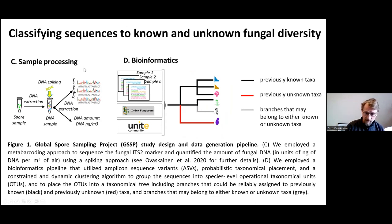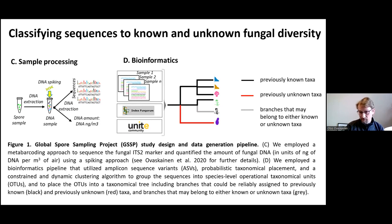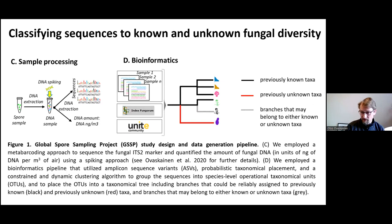The bioinformatics pipeline combines amplicon sequence variants (ESVs) with probabilistic taxonomic placement and a constraint and dynamic clustering algorithm, so that we also have taxonomic placements of species-level OTUs. We try to quantify how many units refer to previously known taxa — the black branches — versus those we can reliably say are missing from existing reference databases, the red branches representing previously unknown taxa. Gray cases are uncertain — we cannot reliably say whether they belong to previously known or unknown taxa.